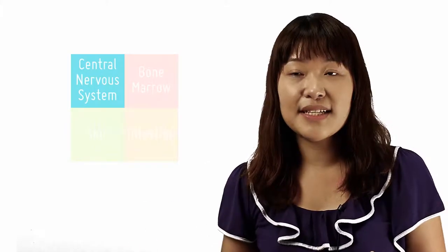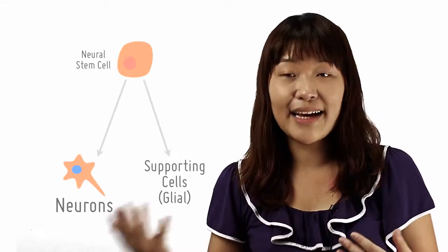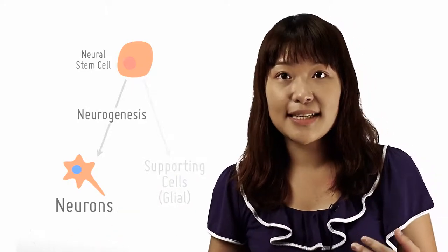First up, the central nervous system. Neural stem cells from our central nervous system can give rise to both neurons as well as supporting glial cells to replace those that died. This process by which neurons are created is known as neurogenesis.